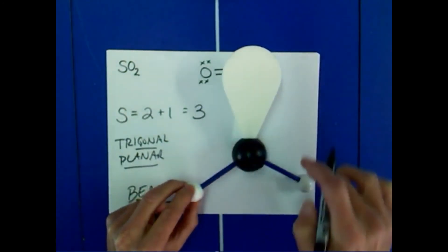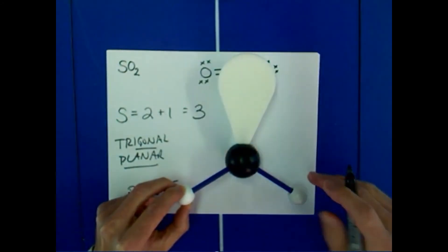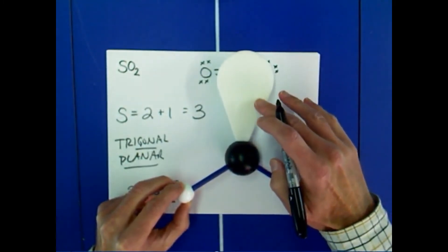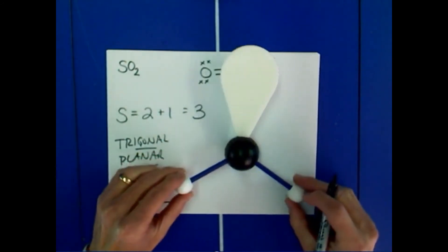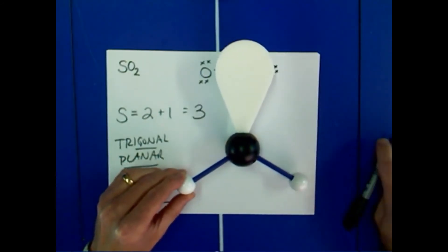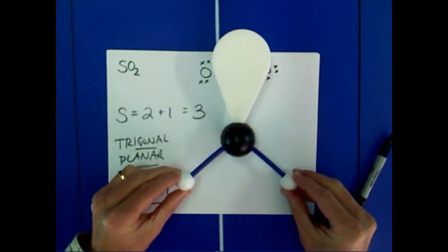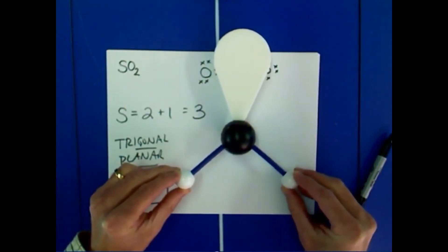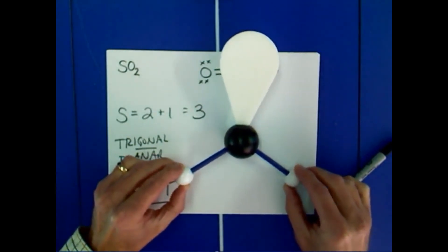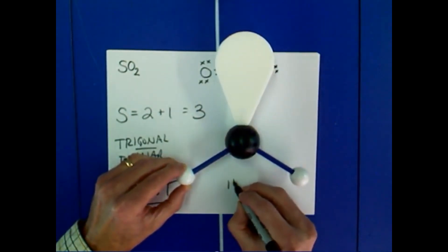The bond angles aren't quite 120 degrees, because the lone pair of electrons is freer to move in space. Because of that freedom to move, lone pairs exert a little more repulsion on the bond pairs, which are localized in space. Lone pairs exert more repulsion on the bond pairs than bond pairs do on each other, which forces this angle to be a little smaller than 120 degrees. The oxygen-sulfur-oxygen bond angle in sulfur dioxide turns out to be about 119 degrees.